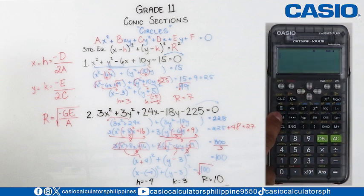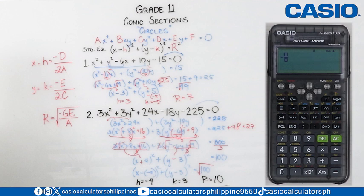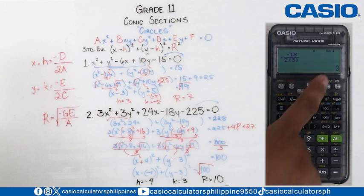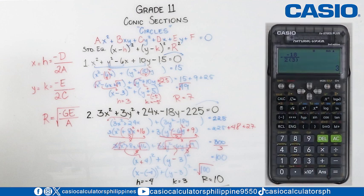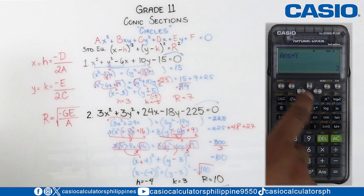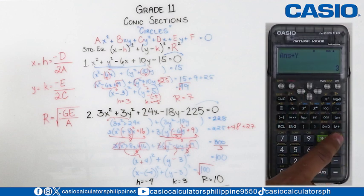Then, let's solve for the value of h. That is negative e over 2c. Our value of e is negative 18 and our value of c is positive 3. Then, press equal sign. We get our k to be equal to 3, which is again the same as what we got a while ago. So now, let's store this to our variable y and press equals.